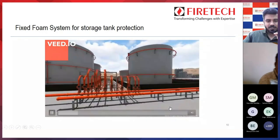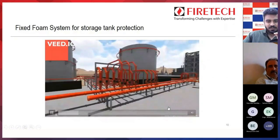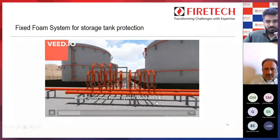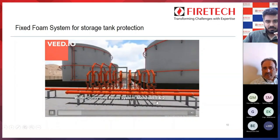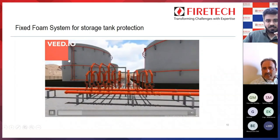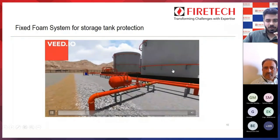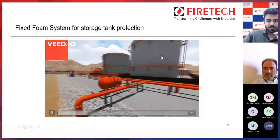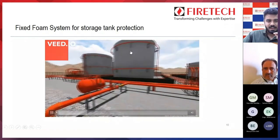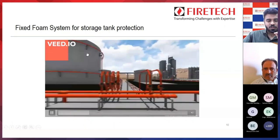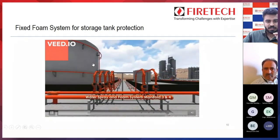This is a bladder tank over here. For the storage tank, along the periphery we are using MV nozzles for secondary protection — that is only for the cooling purpose of the tank. Your primary protection is your foam chamber or makers which have been mounted over the storage tank.